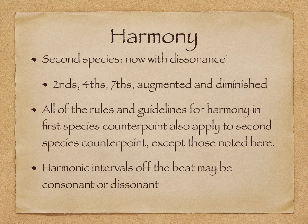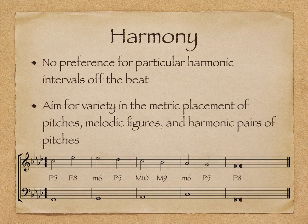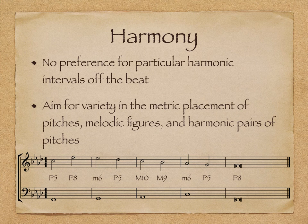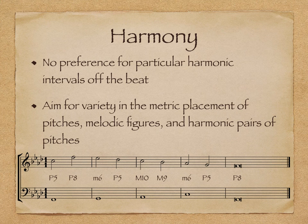Another rule for best practice suggests that harmonic intervals off of the beat may be consonant or dissonant. There is no preference for particular intervals off the beat. Looking at the example below, you can see that there are perfect consonances as well as dissonances on the off-beats. Imperfect consonances are also acceptable. It's important to aim for a variety in the metric placement of pitches, melodic figures, and harmonic pairs of pitches. This is an extension of good lines and the guidelines already learned in first species.